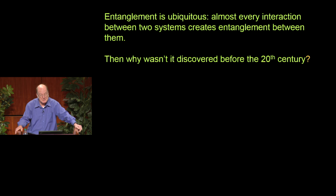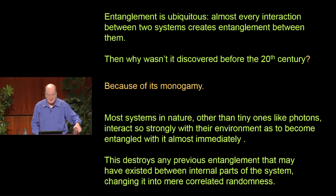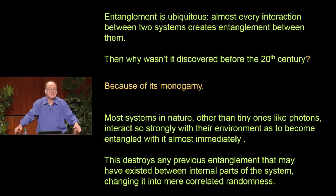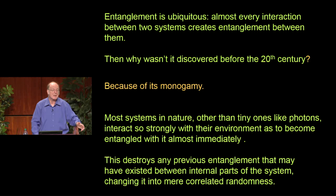The quantum theory of information explains the close connection between cryptography, privacy, computation, and entanglement. If entanglement is ubiquitous and almost every interaction between two systems produces it, why wasn't it discovered until the 20th century? Because of monogamy: most systems, other than tiny ones like atoms or photons, interact so strongly with their environment that they become entangled with it almost immediately. Once you lose track of what they've entangled with, the remaining systems behave as if they're classically correlated—a world full of randomness that looks like things simply have unknown states, arising as a side effect of this subtle phenomenon we didn't understand until the 20th century.